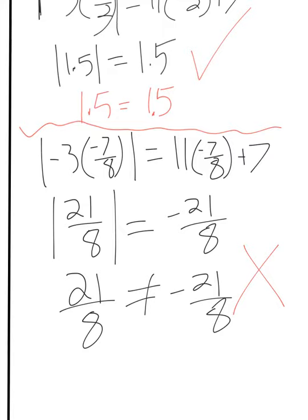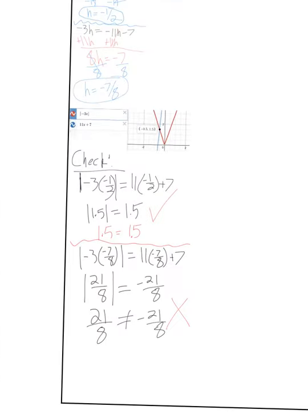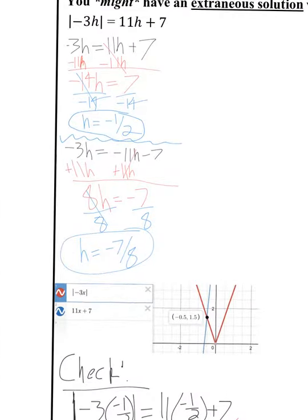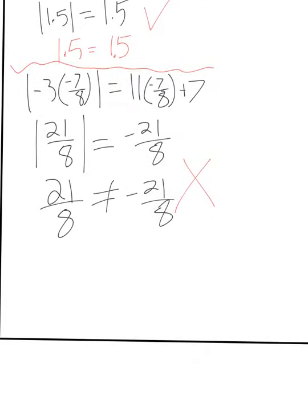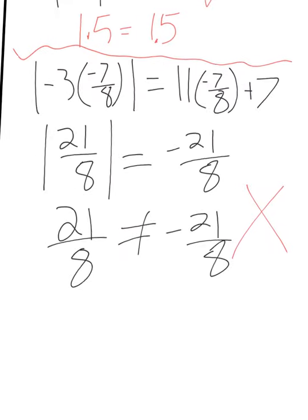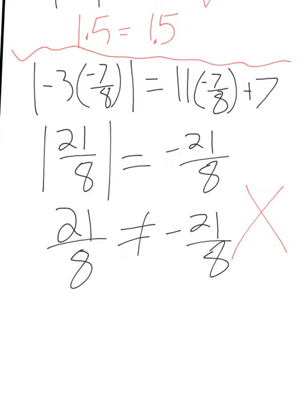An extraneous solution is when you solve it and it appears to be a solution, but when you plug it back in it gives you a false answer — like the positive number of it equals the negative number of it, which is just not true. If you plugged in a number and got 2 on one side and 6 on the other, that's not extraneous — it's just not a solution.